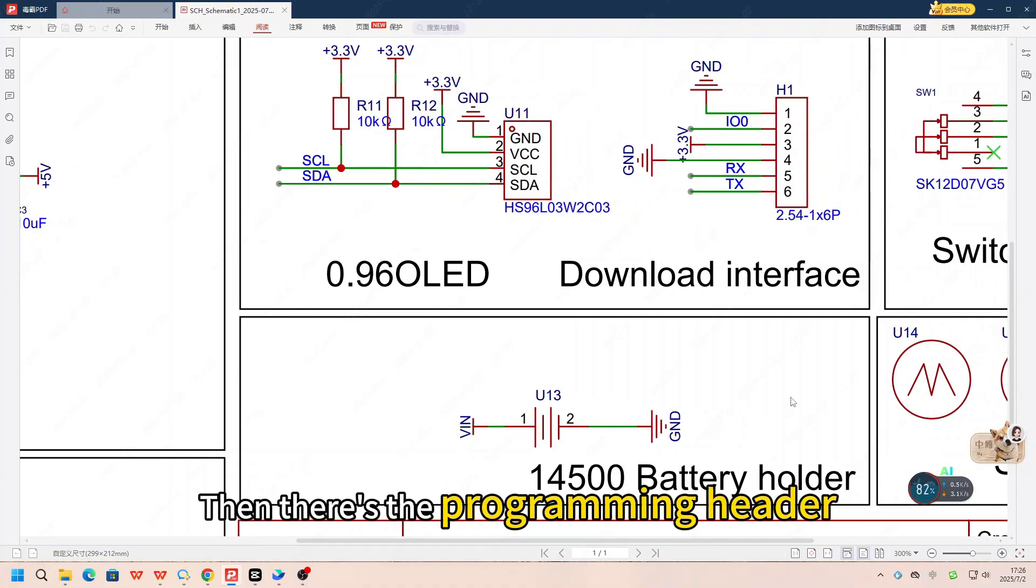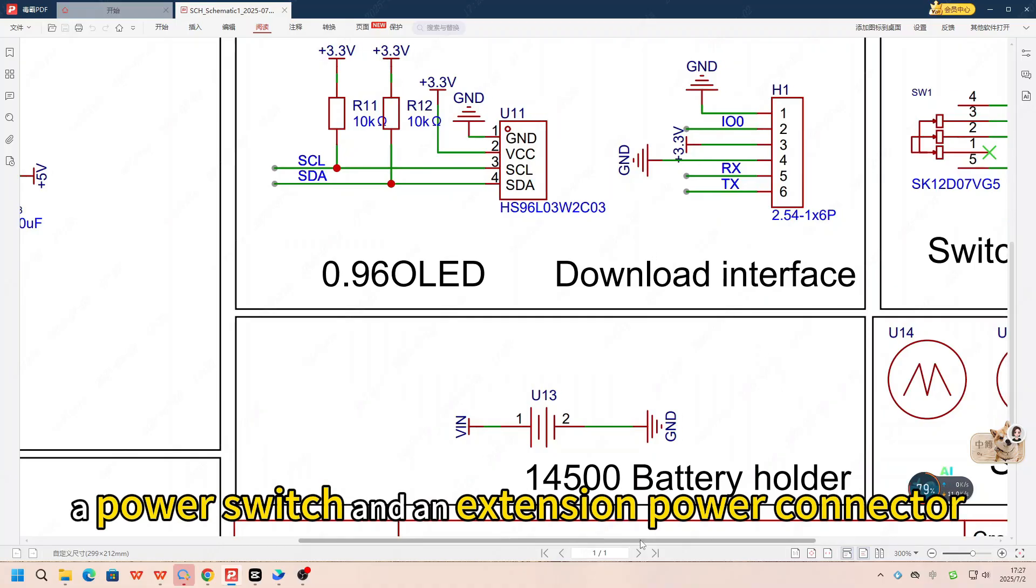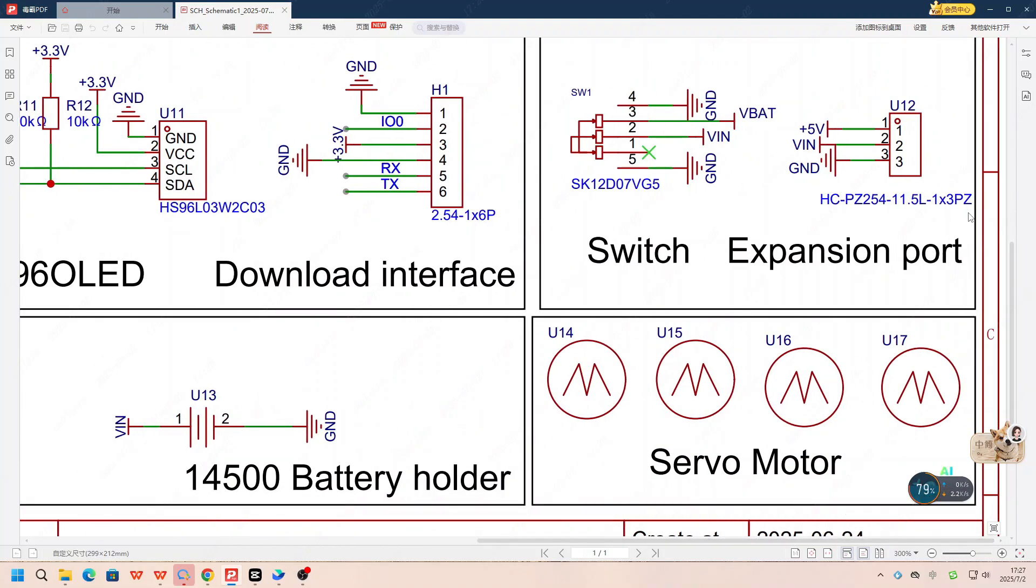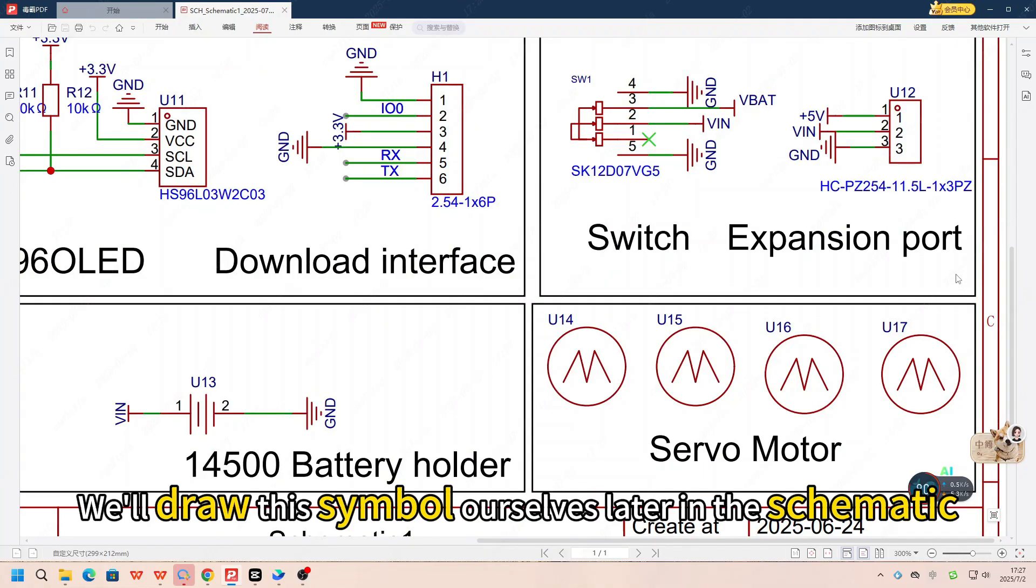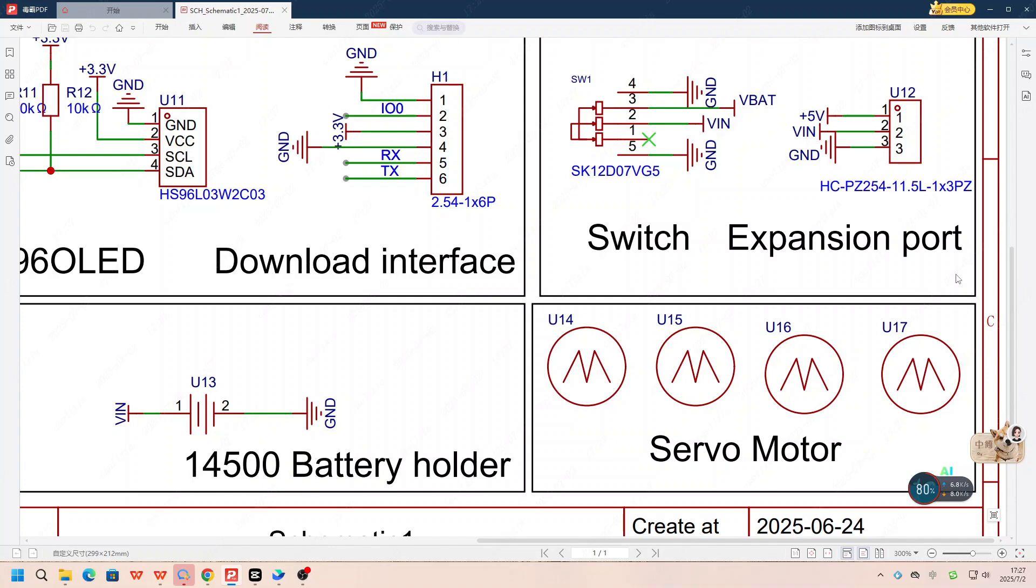Then, there's the programming header. Next to that, a power switch and an extension power connector. Down here is the AA battery symbol, representing the battery holder. We'll draw this symbol ourselves later in the schematic. And finally, the servo headers.